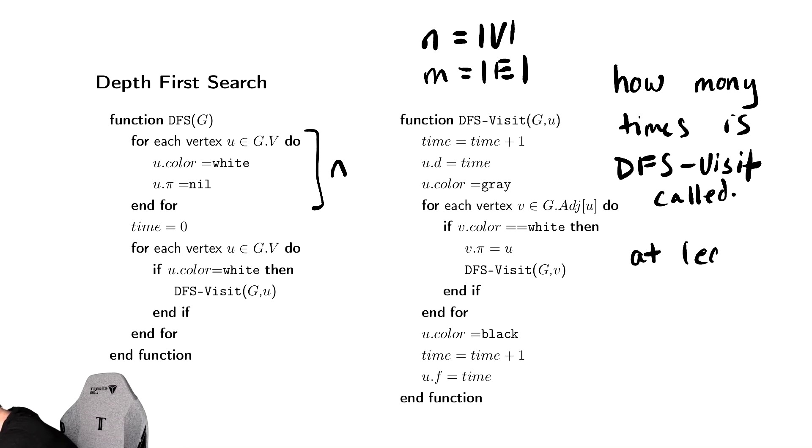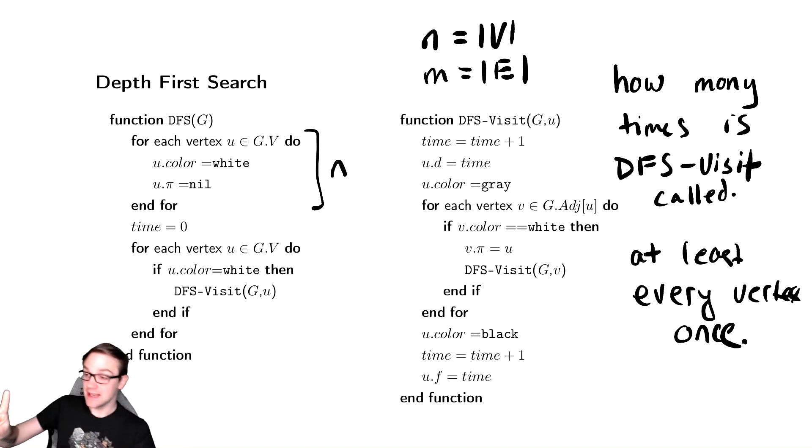And if we look at DFS-Visit, the very first thing it does before it contemplates recursion or doing anything is set the color of the vertex you're exploring to be gray.